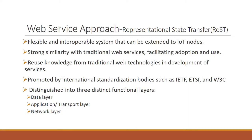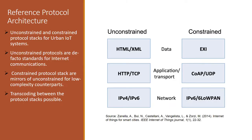A reference protocol stack can be constrained or unconstrained. The de facto standards of internet communication such as XML, IPv4, and HTTP are mirrored in the constrained protocol by low-complexity counterparts like EXI, CoAP, and 6LoWPAN, and can be used for easy access and interoperability of IoT nodes. The protocol stack can be distinguished into three different functional layers: data, application, and transport and network.